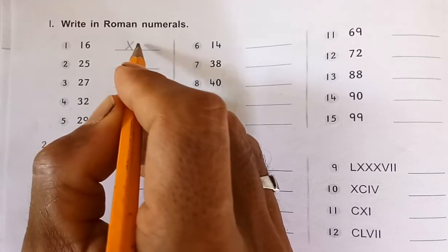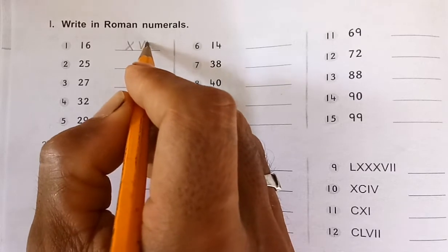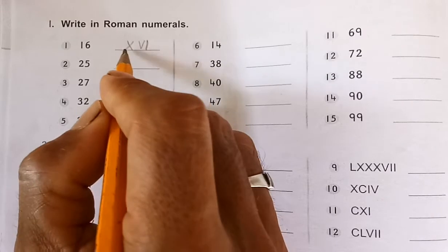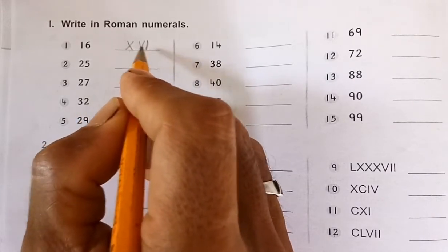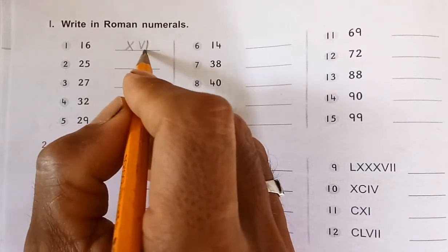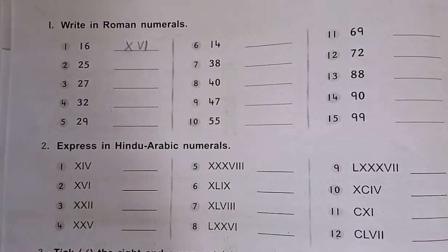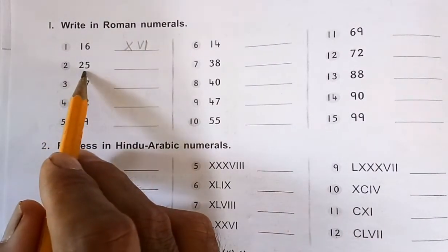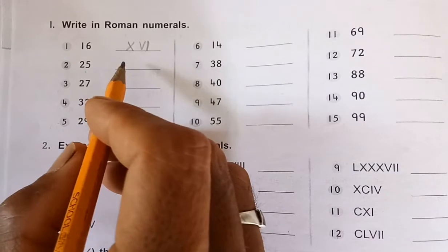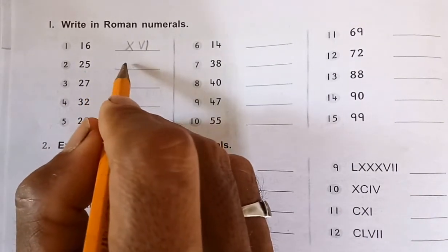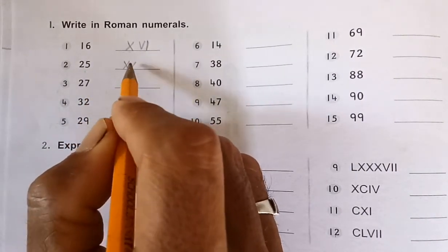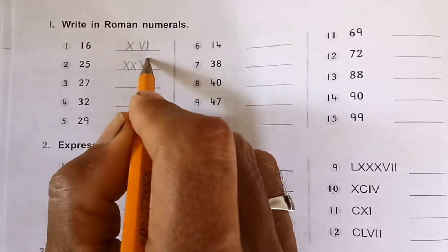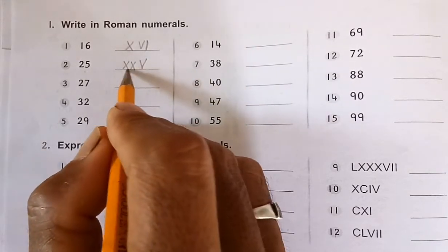So for 16, we know 16 is 10 plus 6. X represents 10 and VI represents 6, so 16 is written as XVI. Next, 25 is 20 plus 5. For 20 we write XX, and for 5 we write V, so 25 is written as XXV.